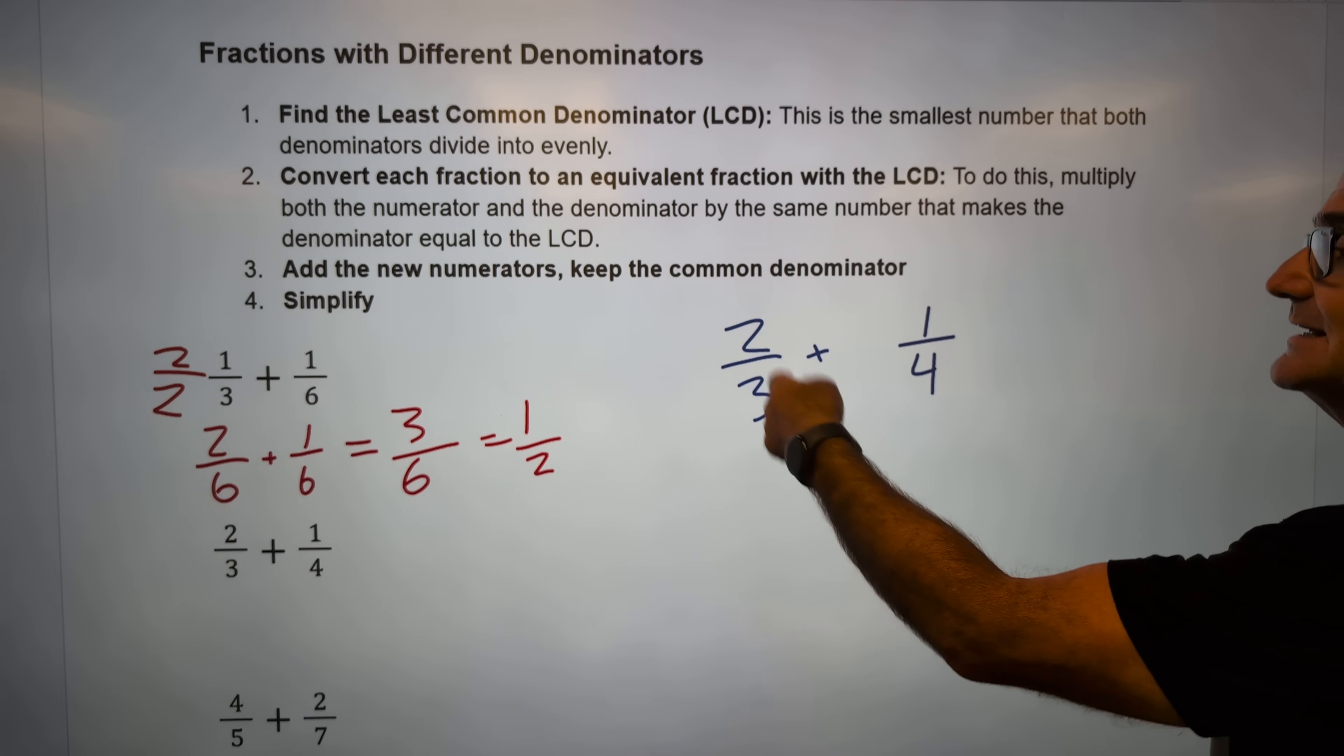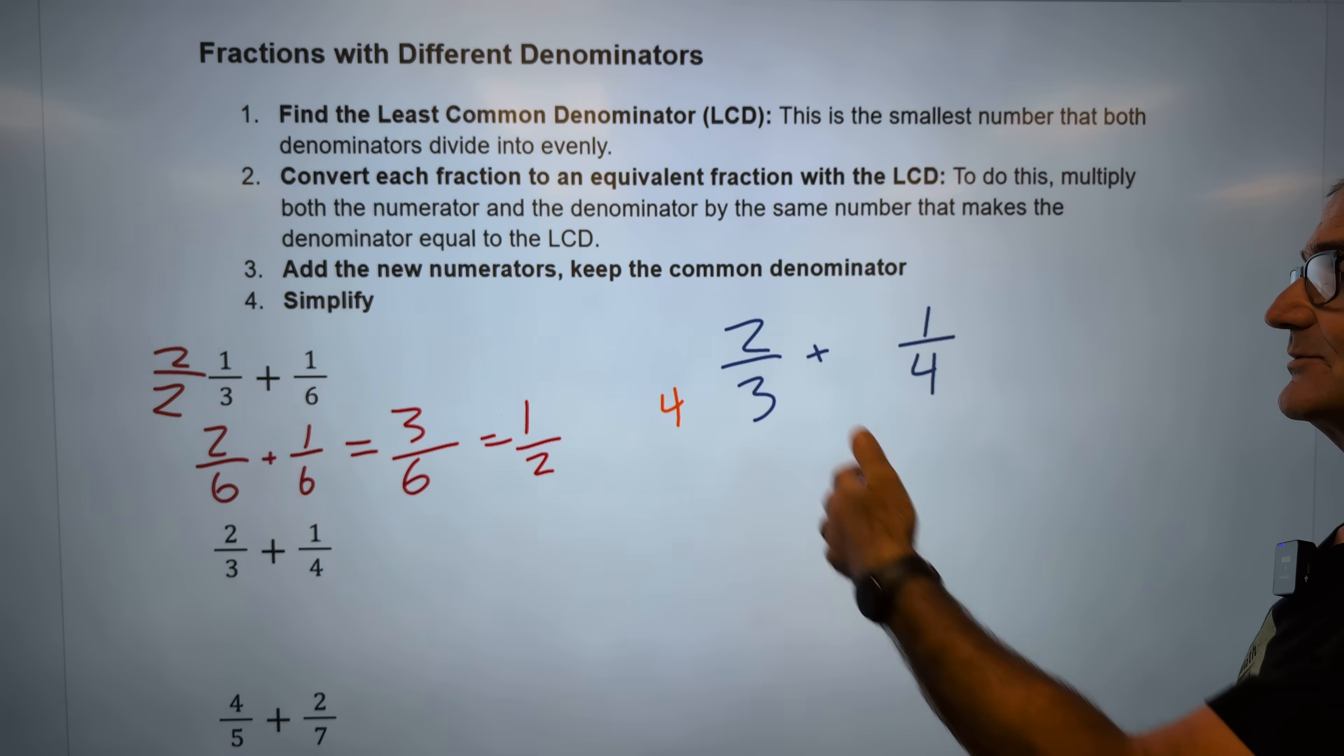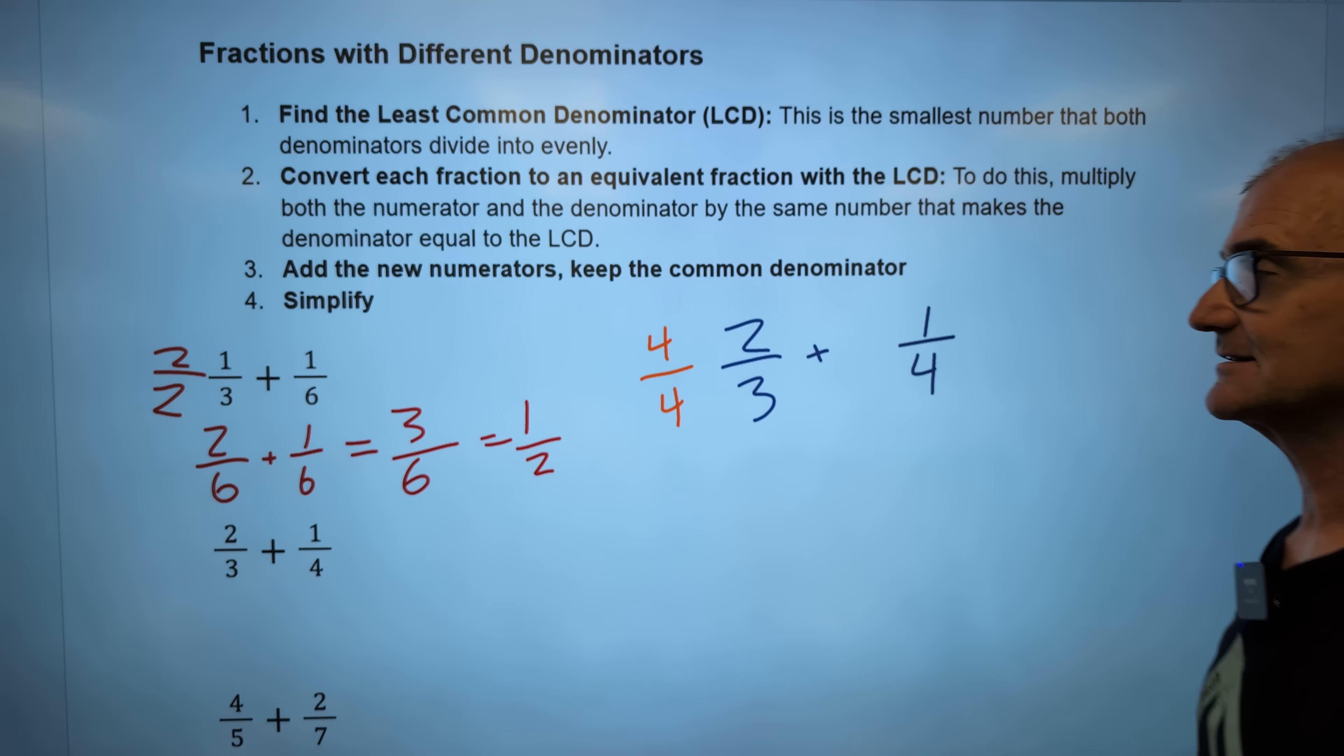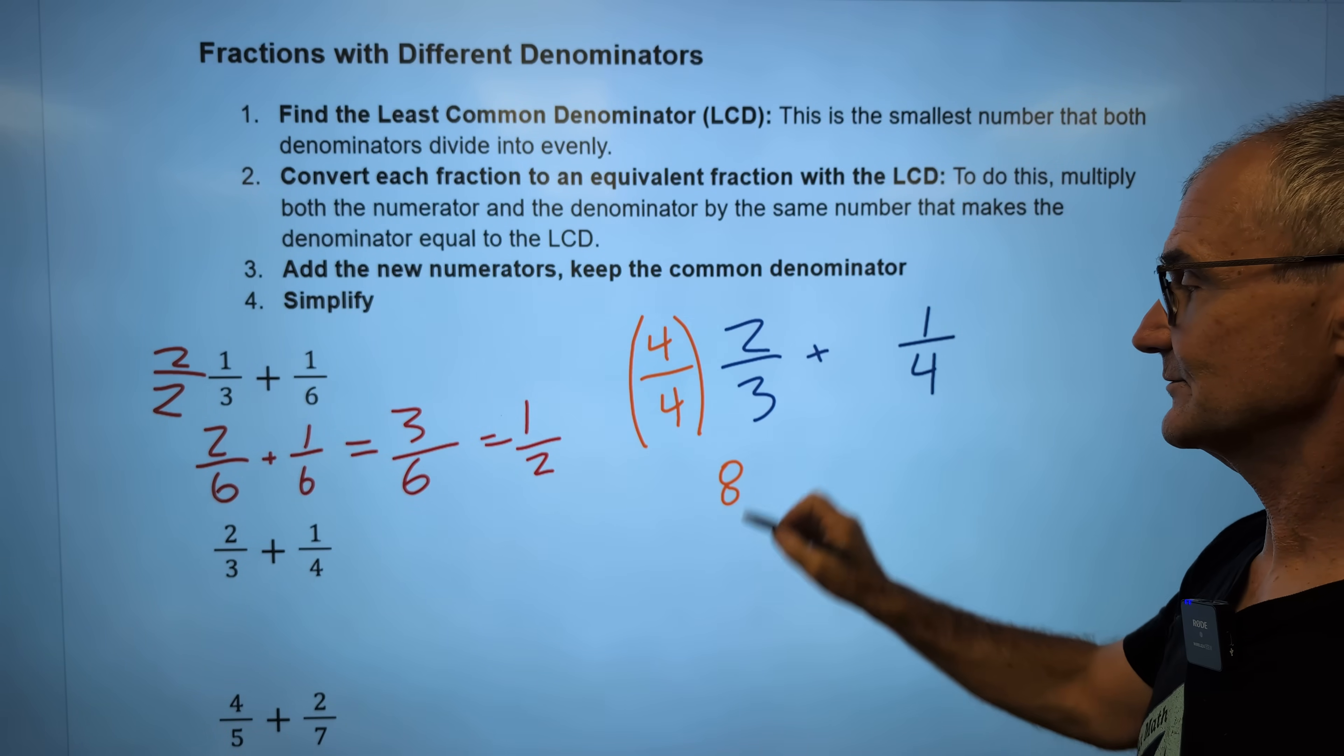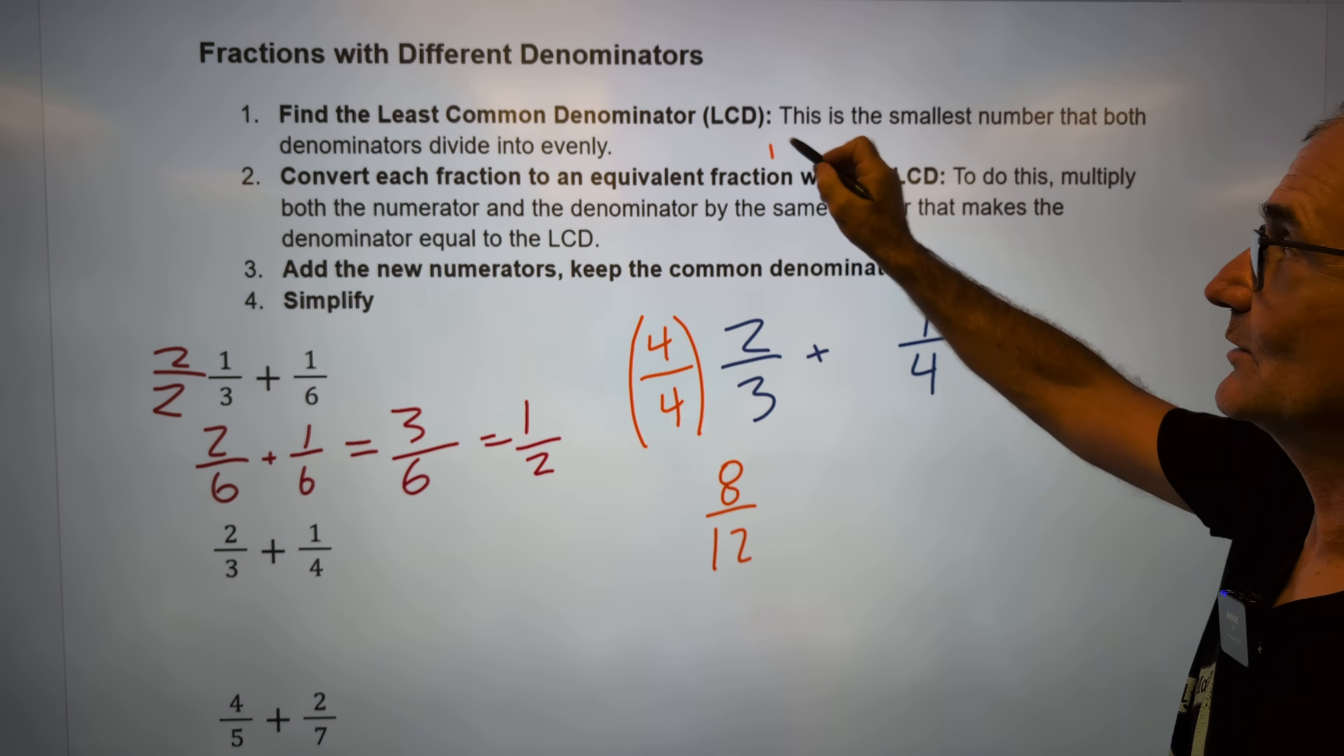How do I convert three into a twelve? I have to multiply it by four. I can only multiply it by a factor of one so as not to affect the value. So I'm going to multiply that two-thirds by four over four. To get an equivalent, four times two is eight. Four times three is twelve.